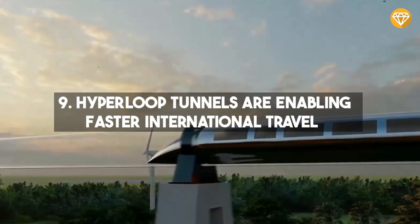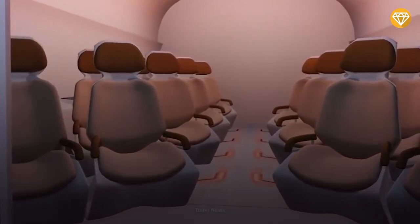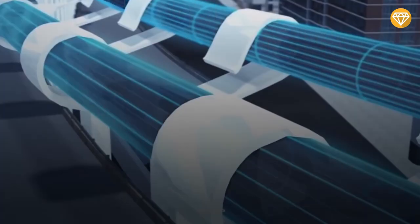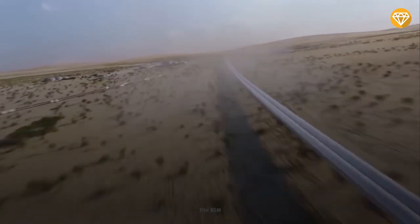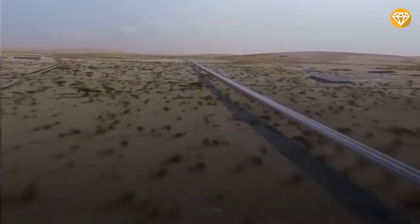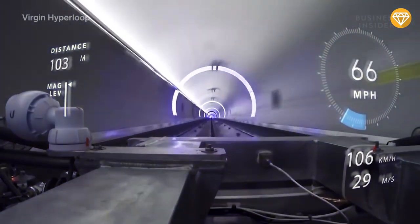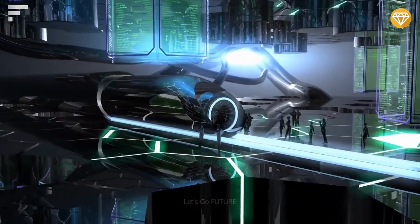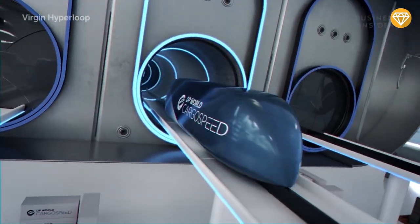Number 9. Hyperloop tunnels are enabling faster international travel. The Hyperloop concept usually involves passenger pods traveling through pressurized tubes using electric propulsion and magnetic levitation. Cargo is also transported considerably faster than before with this method. Hyperloop pods travel at speeds between 600 and 700 miles per hour. They also reduce transit-related greenhouse gas emissions by 90%. And due to the time they save, they provide economic benefits totaling over a trillion dollars every year when compared to previous transportation methods.